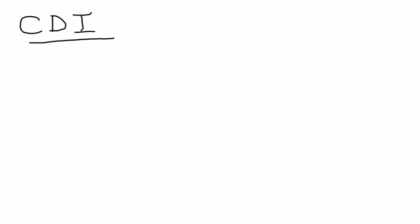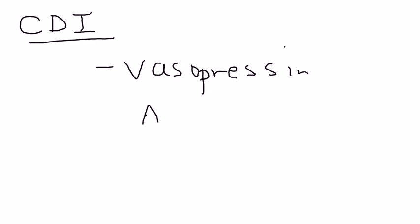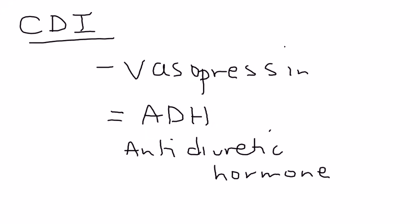Central Diabetes Insipidus is an issue that involves a hormone known as vasopressin, also known as ADH — anti-diuretic hormone — synthesized in the hypothalamus and stored and released by the pituitary in the brain. Before we talk about CDI, we need to talk a little bit about what ADH actually does.